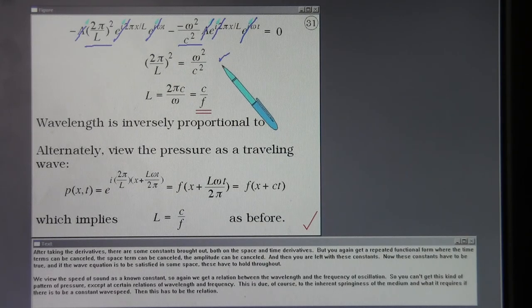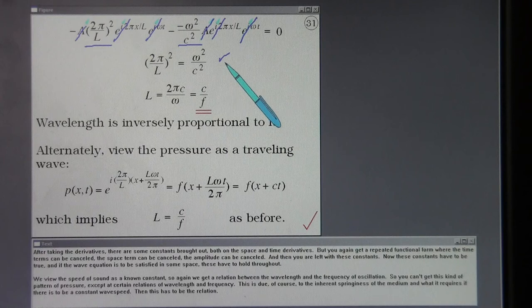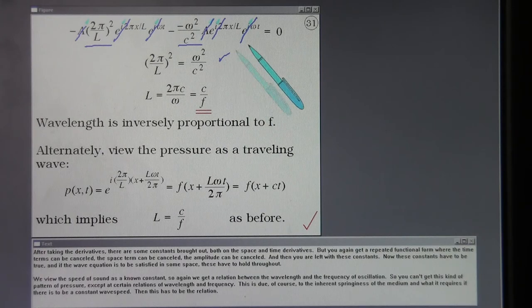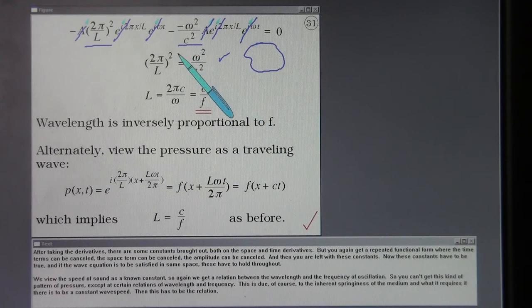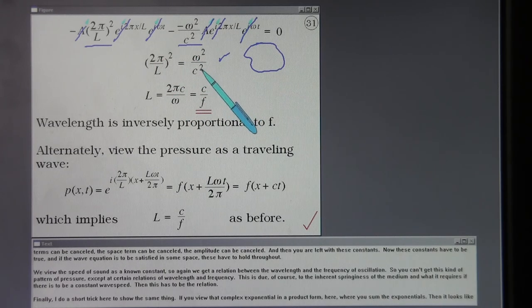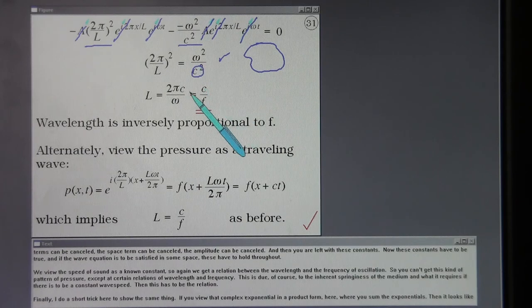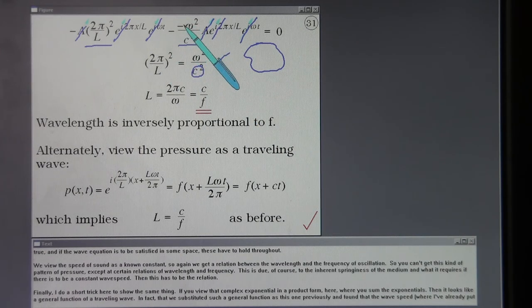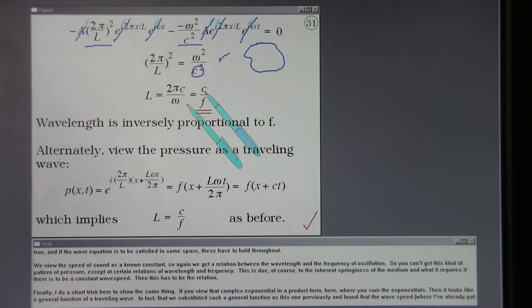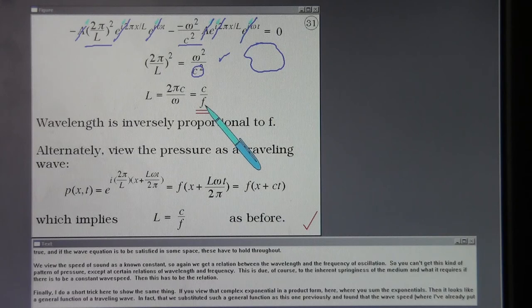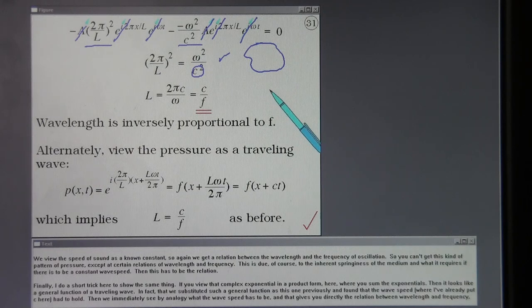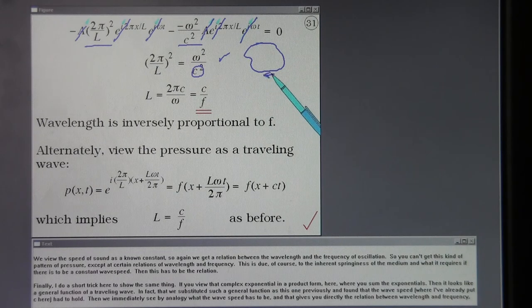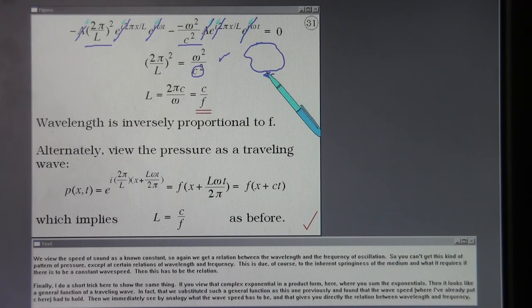Now, these constants have to be true and if the wave equation is to be satisfied in some space, these have to hold throughout. We view the speed of sound as a known constant so again we get a relation between the wavelength and the frequency of oscillation. So you can't get this kind of pattern of pressure except at certain relations between wavelength and frequency. This is due of course to the inherent springiness of the medium and what it requires if there is to be a constant wave speed then this has to be the relation.